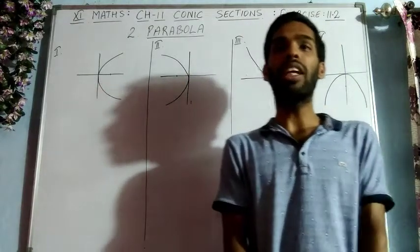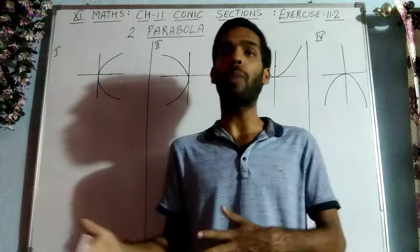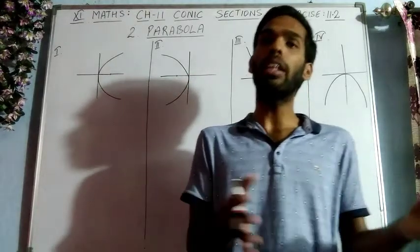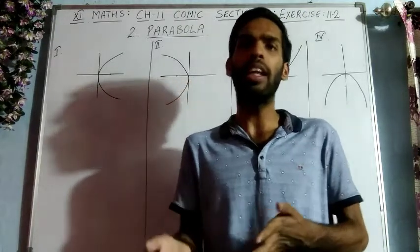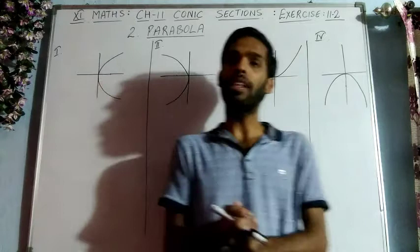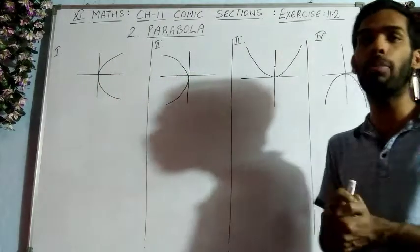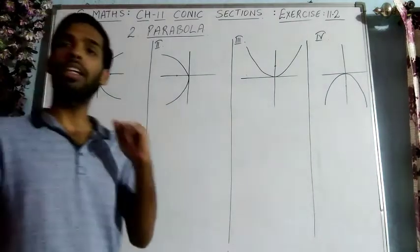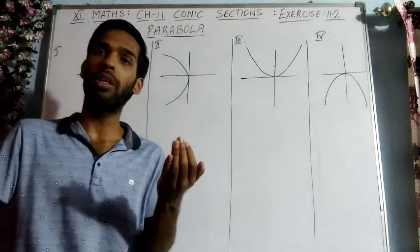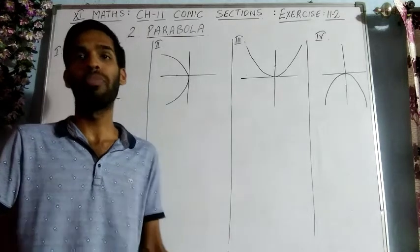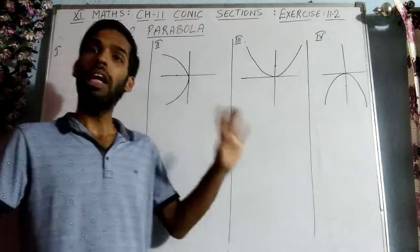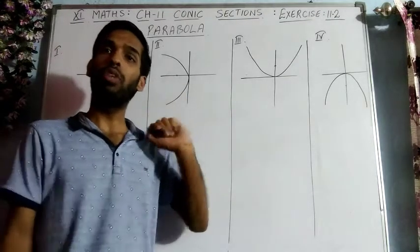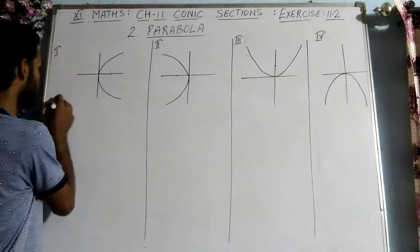We can classify or differentiate the parabola into four categories. That means it is not that there are four types of parabola in general; rather, we can divide this parabola into four categories based on the axis about which it is symmetrical.